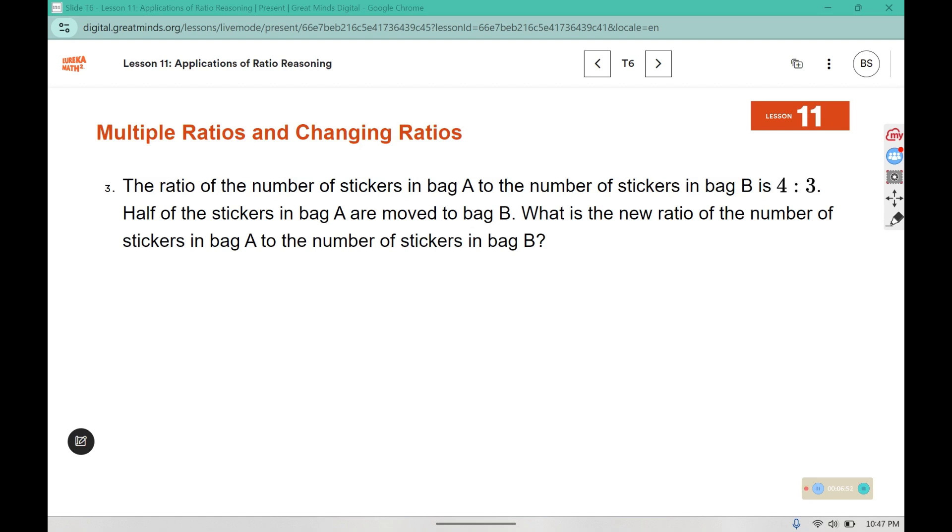Three, the ratio of the number of stickers in bag A to the number of stickers in bag B is 4 to 3. Half of the stickers in bag A are moved to bag B. What is the new ratio of the number of stickers in bag A to the number of stickers in bag B? I like to split it up into two scenarios. I have the before and I have the after. So before I had bag A and bag B, and after I also have bag A and bag B.